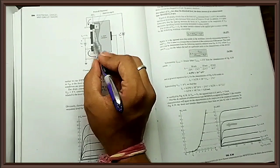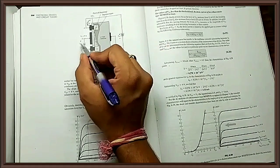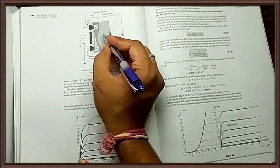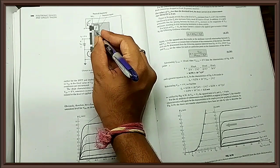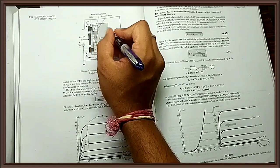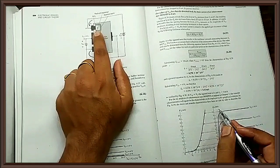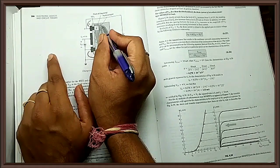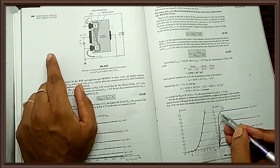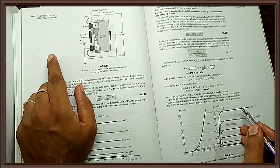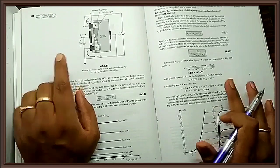If I keep VGS constant and increase VDS, the channel at the drain end starts becoming zero. Once the channel at the drain end becomes zero, ideally I would expect current to be zero, but a thin channel still exists making the current constant. The point at which the channel at the drain end becomes zero is called the pinch-off point. After the pinch-off point, even if I increase VDS, the current remains constant — this is saturation. The region before pinch-off is the triode region.